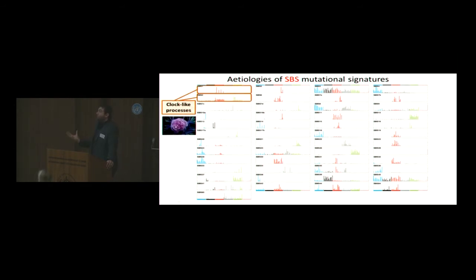Signatures one and five, we believe these are clock-like mutational processes. These are processes that accumulate with age. The older you get, the more mutations you get from these signatures. Signature four is due to tobacco smoking. I showed you the evidence we've used to assign this etiology. However, if you ask, does tobacco chewing have the same signature? Well, it doesn't. It has a slightly different signature for one reason or another, and that's signature 29.